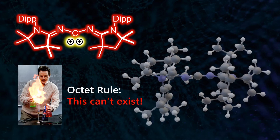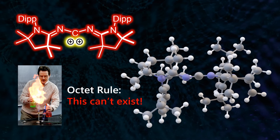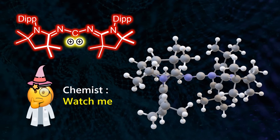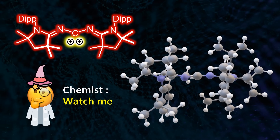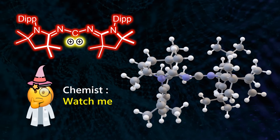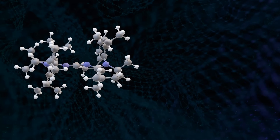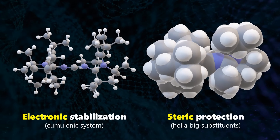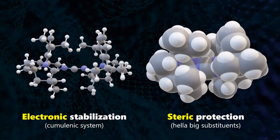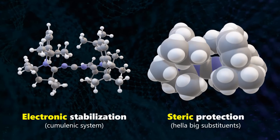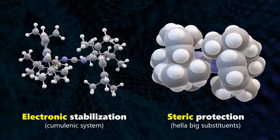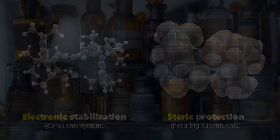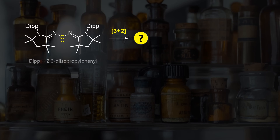When your chemistry teacher taught you about the octet rule, they were not expecting this compound. Undressing a carbon to just four valence electrons looks impossible. A genius combination of energetic stabilization and steric shielding allowed chemists to recently isolate this novel doubly oxidized carbene. Keep watching to learn about its synthesis and reactivity.